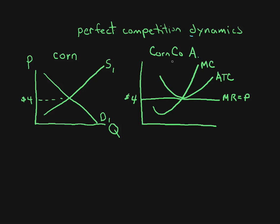Welcome to Blackboard discussion on Perfect Competition number 7. Again we're going to be looking at the dynamics of this particular model, Perfect Competition, only this time instead of shifting demand and supply, we're going to look at what happens when costs change.